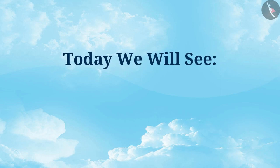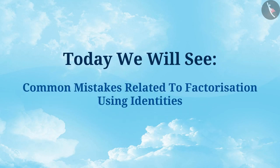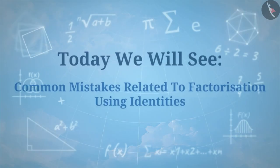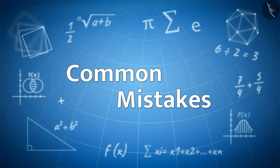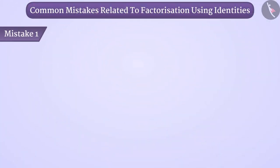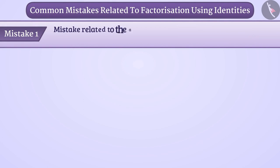Today we will see common mistakes related to factorization using identities. Mistake 1: Mistake related to arrangement of terms in algebraic expression.